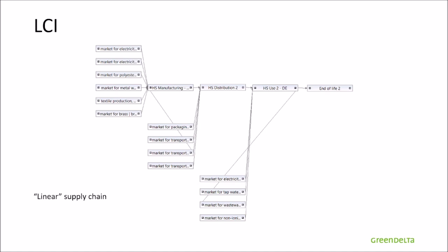Now let's move to the structure of the model. You can see here the traditional linear way to build your supply chain in OpenLCA, where the intermediate product from each stage is used as an input for the next stage. A product system is created from the end-of-life process. It was originally structured like this in a linear supply chain, but it was changed to have better visibility of the results, as we will see in the next section.